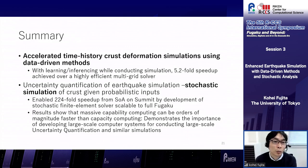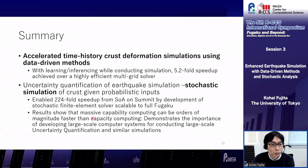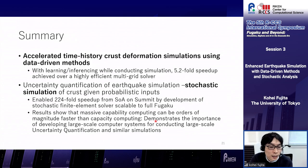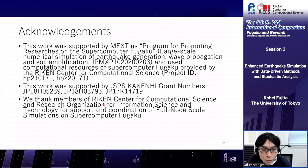In summary, I introduced two topics today. First, accelerated time history crustal deformation simulation using data-driven methods with online learning and inferencing, achieving a 5-fold speedup over a highly efficient multigrid solver. Second, a stochastic simulation method for Earth's crustal deformation showing that massively parallel capacity computing can be orders of magnitude faster than conventional approaches, demonstrating the importance of developing large-scale computer systems for large-scale uncertainty quantification and similar simulations. This work was supported by MEXT and used computational resources of the supercomputer Fugaku, supported by JSPACE KAKENHI, and we thank members of RIKEN RCCS and the Research Organization for Information Science for the full-node-scale simulations.